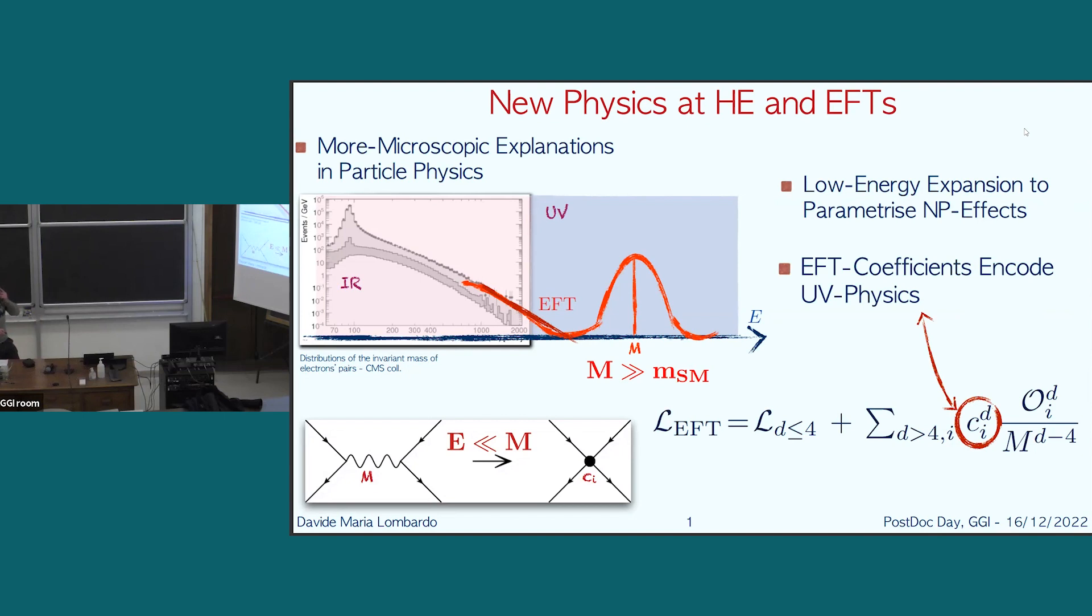In formulas, you see that the standard model dimension four Lagrangian is augmented by a tower of new interactions whose importance is given by these Wilson coefficients. These are important not only because they represent what this model has to fit to reproduce the data, but also because they give the importance of these terms, leading them to the accessible information at low energy on the UV physics.